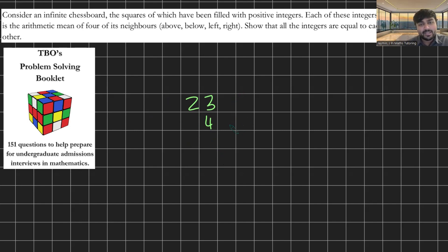We're going to fill these up with integers like so, positive integers to be specific, and we want to show that all integers must be equal to each other. So as I say I'm going to be solving this in two different ways.